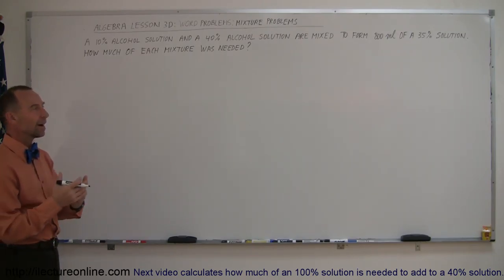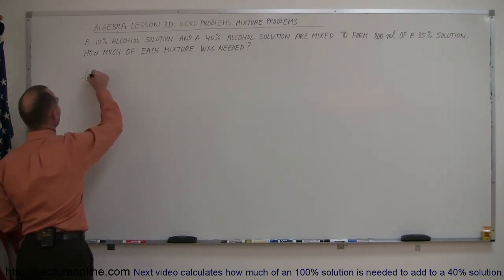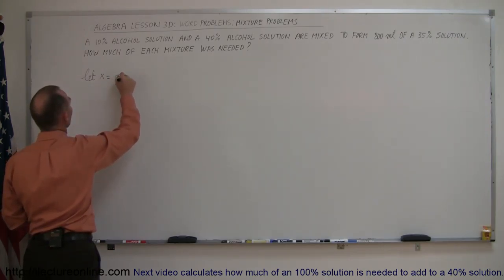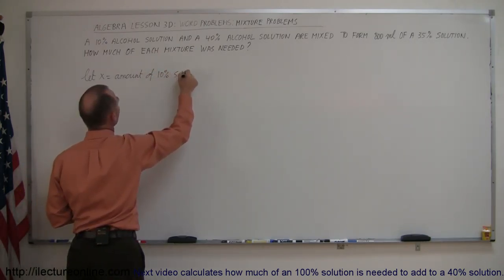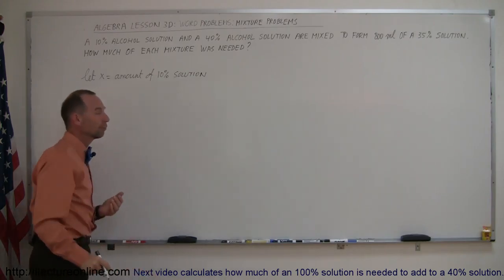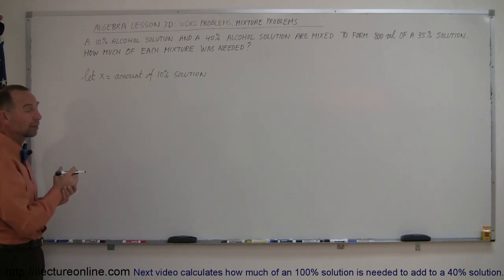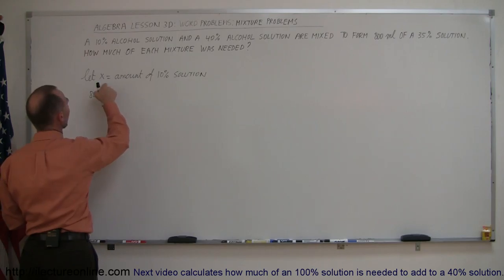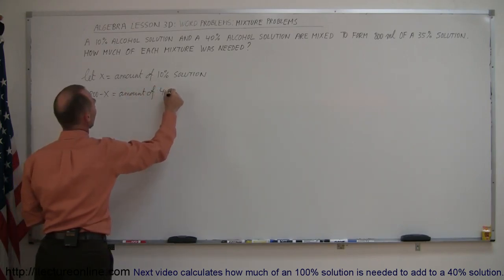First, we define the amount of each solution in terms of x. Let x equal the amount of the 10% solution. If we used x amount of the 10% solution, then the total 800 milliliters minus x is the amount we used of the other solution — so 800 minus x equals the amount of the 40% solution.